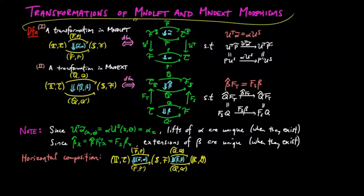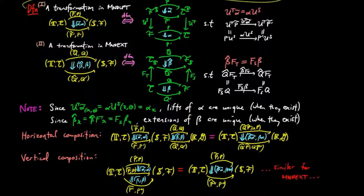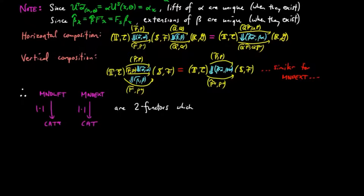Notice that we inherit the horizontal and vertical composition of natural transformations of categories as shown in the following diagrams. Therefore, the categories of monad lifts and monad extensions are two-categories, and the forgetful functors are both one- and two-faithful, which means faithful as an ordinary functor and also faithful on hom objects, which have a categorical structure.